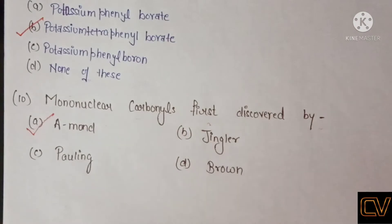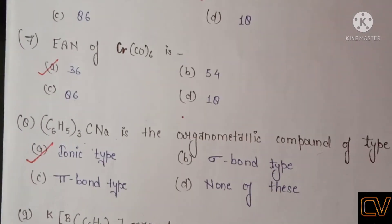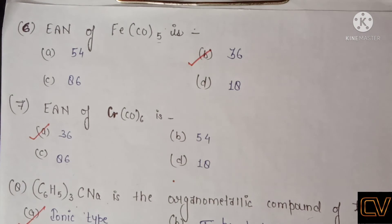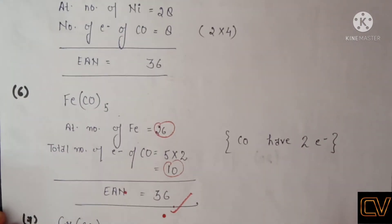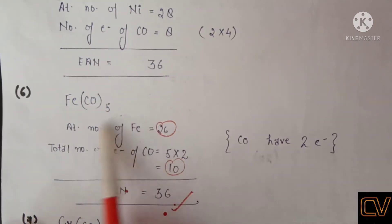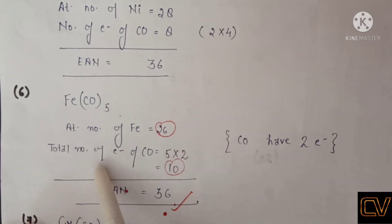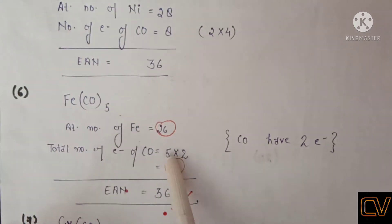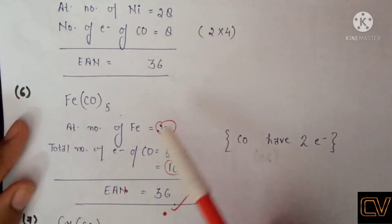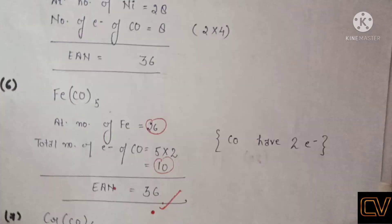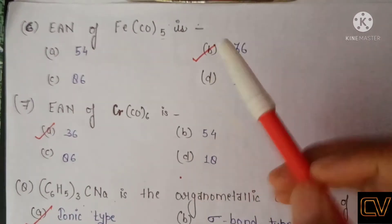Moving to question number 6: what is the effective atomic number of Fe(CO)5? The central metal atom is ferrous (iron), with atomic number 26. CO has 2 electrons per ligand. There are 5 CO molecules, so 5 × 2 = 10. After adding 26 + 10, we find 36. The effective atomic number of this compound is 36, so the correct option is option B.